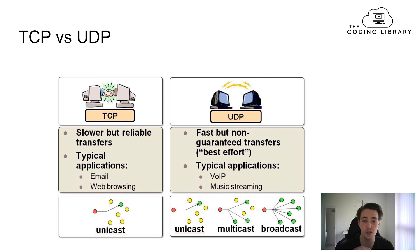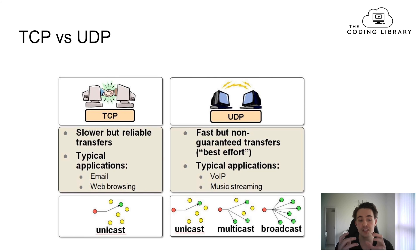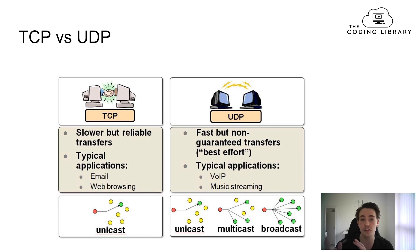First of all, we're going to compare TCP versus UDP. TCP is slower but provides reliable transfer. TCP is a connection between a server and a client, so we can only communicate between one server and one client.